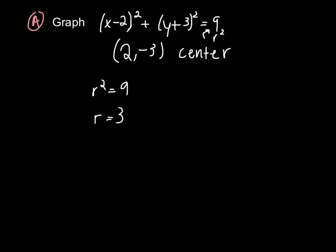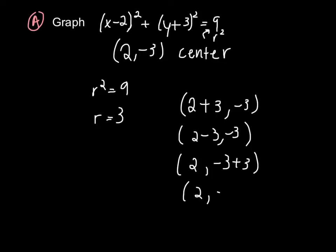From this, we can gather that we need to have our points which are each 3 units from the center. So we have 2 plus 3, negative 3 as a point; 2 minus 3, negative 3; 2, negative 3 plus 3; and 2, negative 3 minus 3. These will give us our points which are exactly 3 units away from the center.